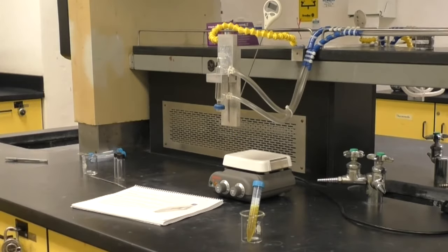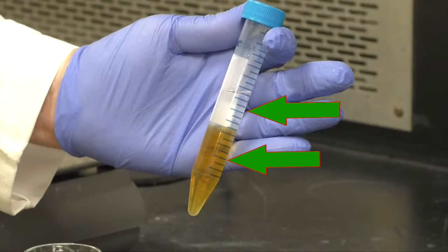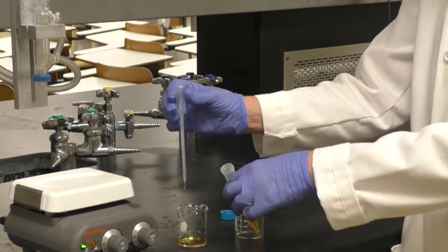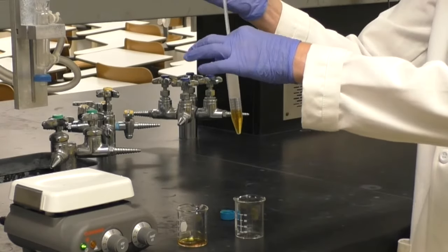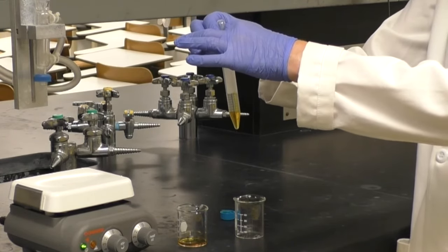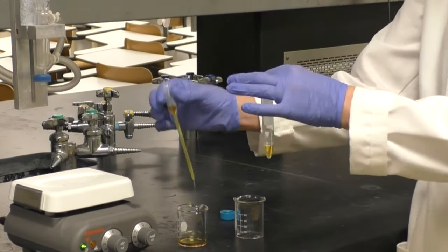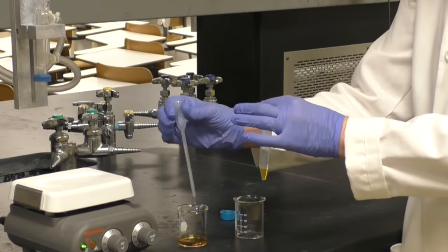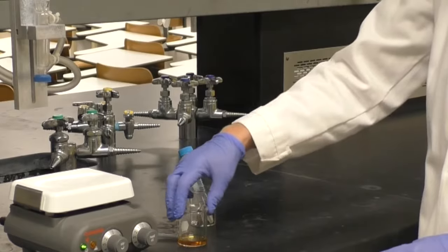Place the centrifuge tube in a beaker and allow the layers to separate. Use a transfer pipette to carefully remove the lower aqueous layer which contains the conjugate base of the eugenol. Transfer this liquid to a 50 mL beaker.